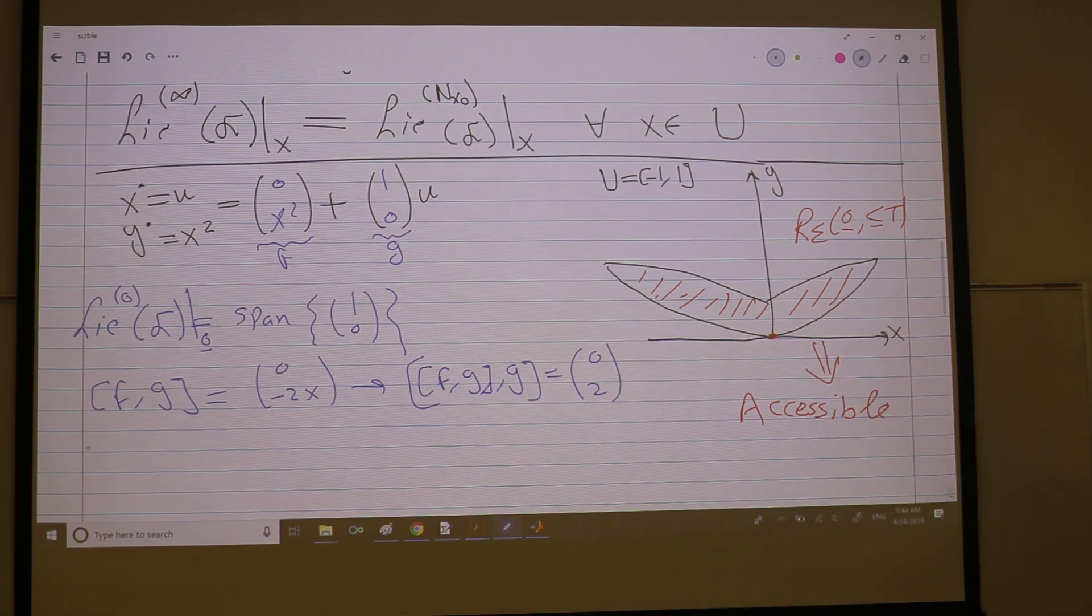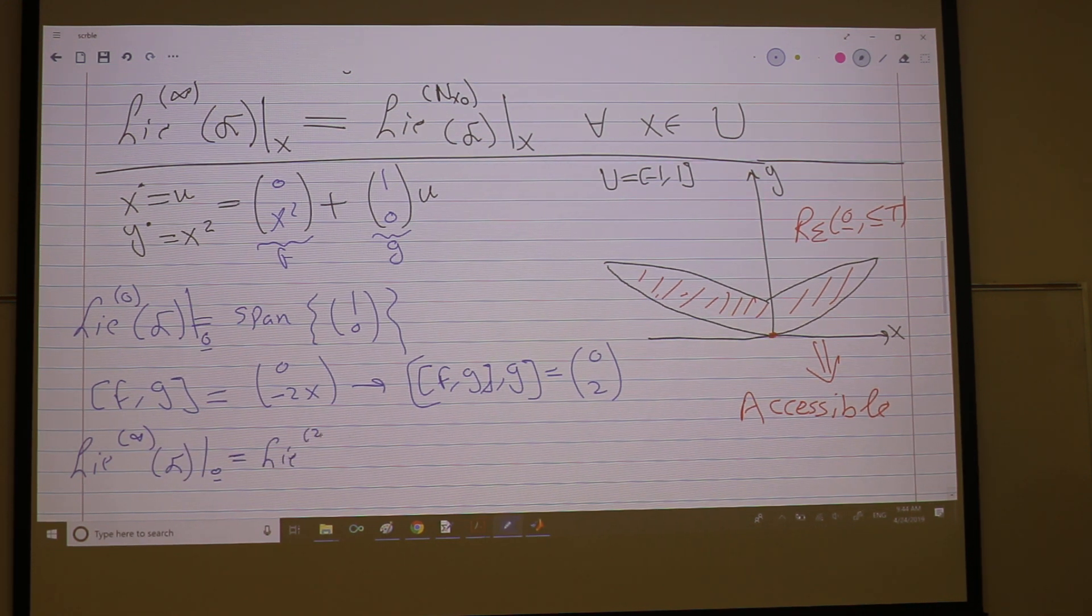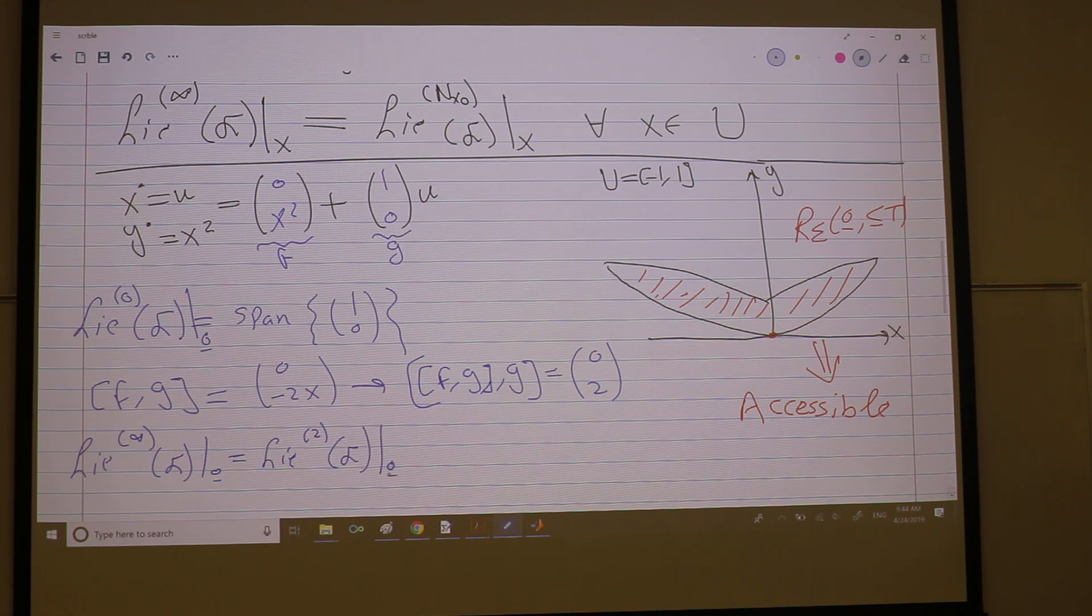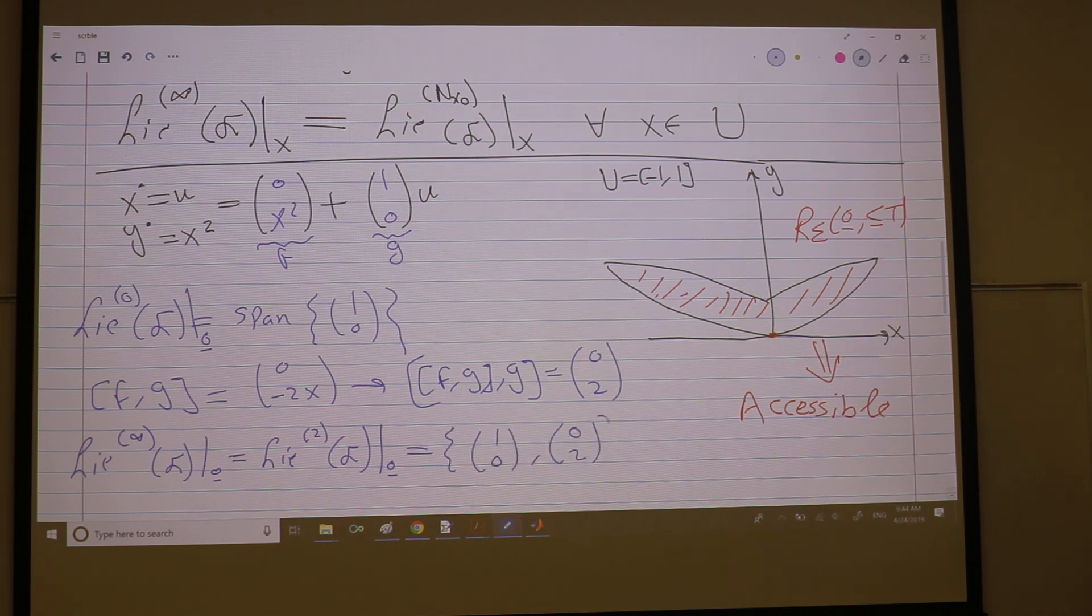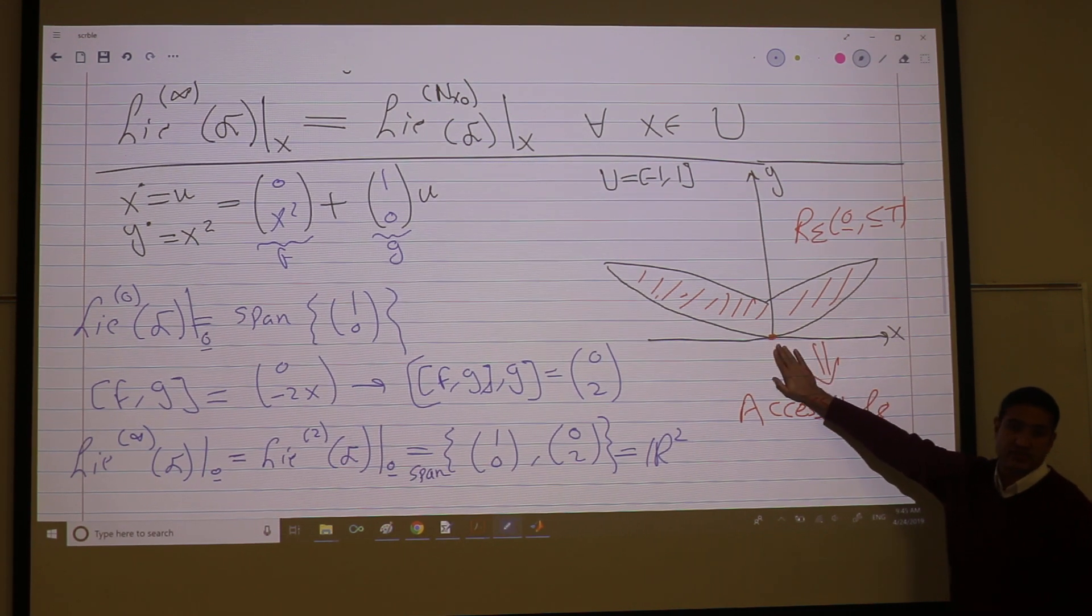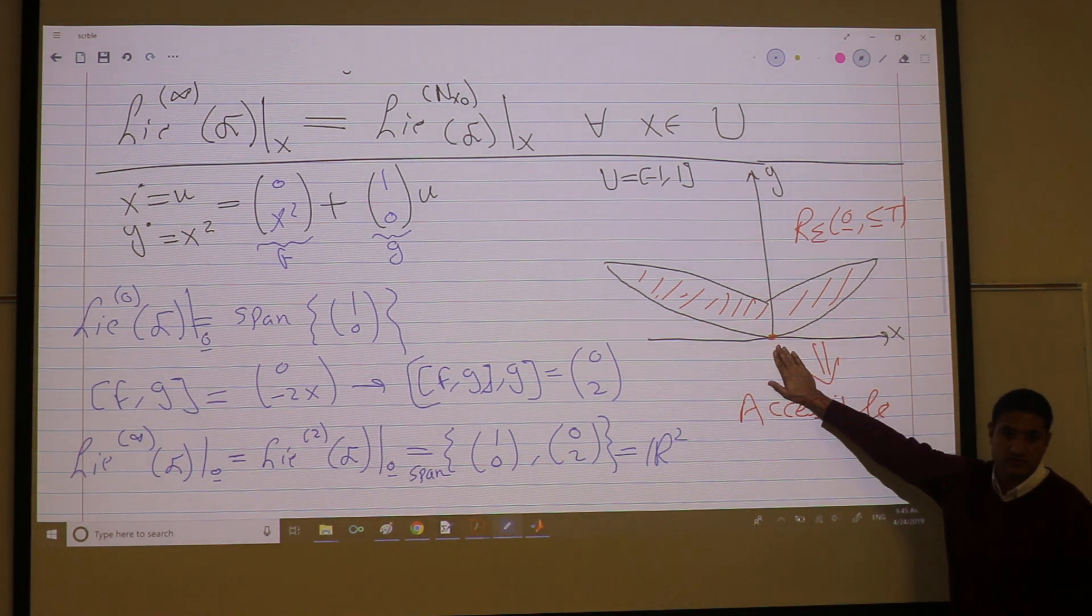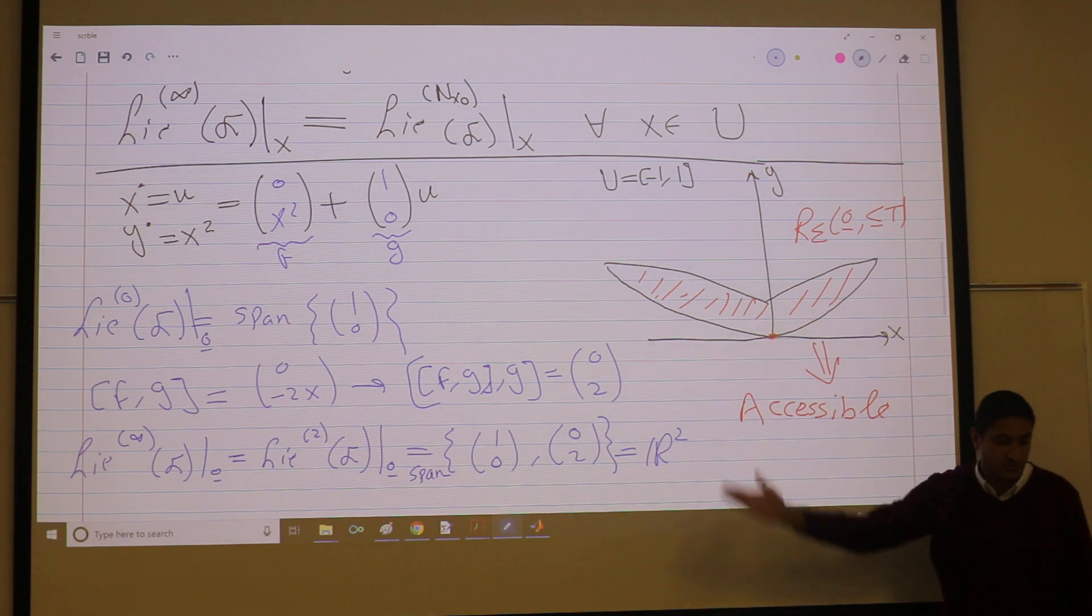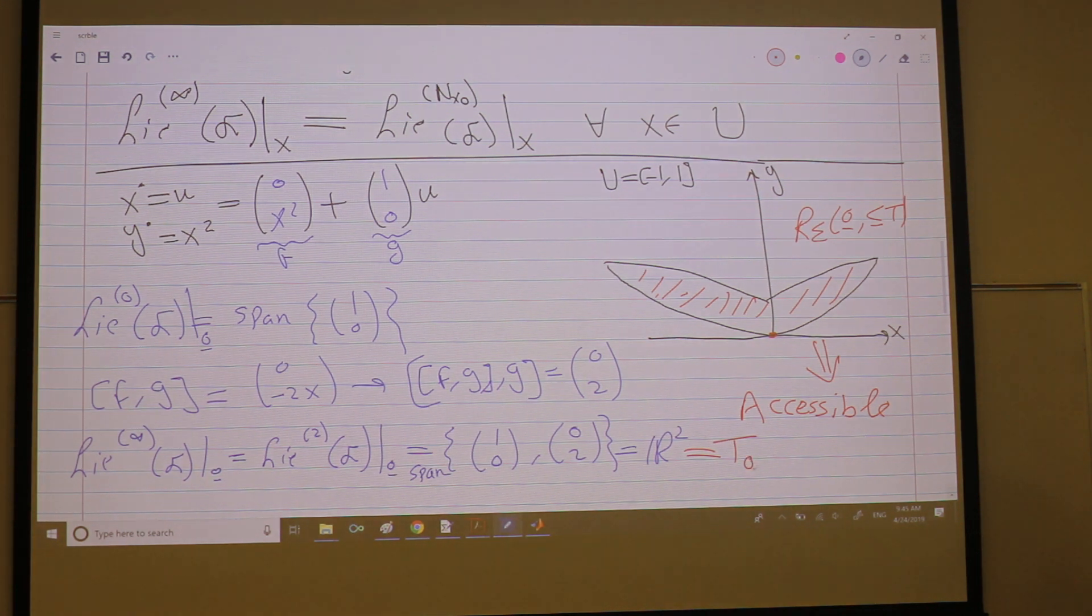So actually, the Lie-infinity of f at zero is the same as Lie-2. Just two steps and I covered everything. So I should stop. I will not get any new things because I'm two dimensions and I covered two dimensions. The span of this guy is R2, right? And what is the tangent space of this plane at this point? What's the tangent space of R2? The entire R2. So this is actually T zero R2, right?